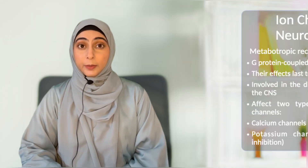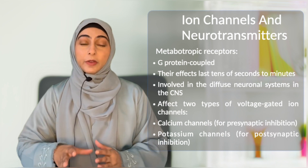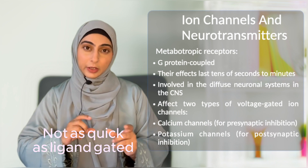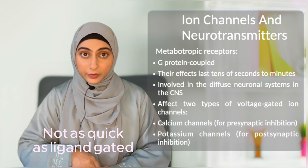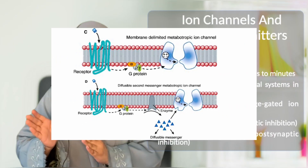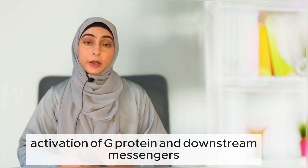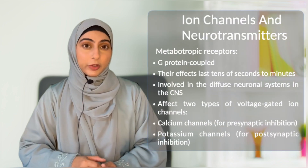Other than ion channels, we have metabotropic receptors — the G-protein coupled receptors. G-protein coupled receptors are not as quick as ligand-gated channels; their effect can last seconds to minutes, and they are involved in diffuse neuronal pathways. G-proteins produce their effect mostly through activation of downstream signaling, but sometimes the beta-gamma subunit also causes alteration of ion channels — most commonly, presynaptically calcium channels are inhibited, and postsynaptically potassium channels are inhibited through this pathway.